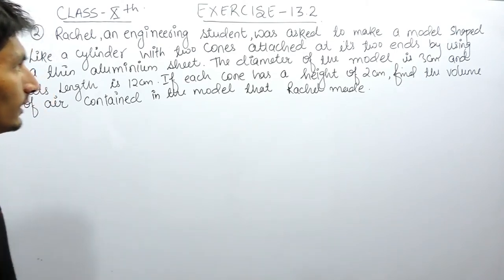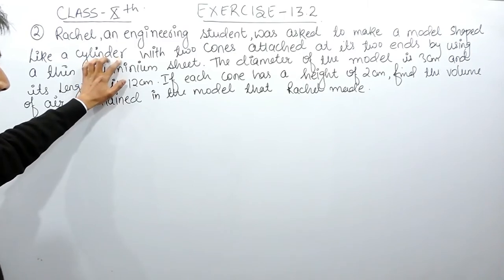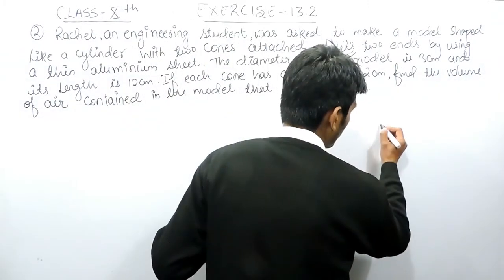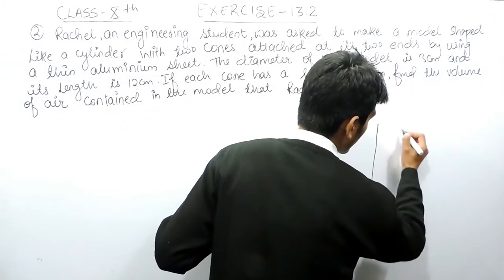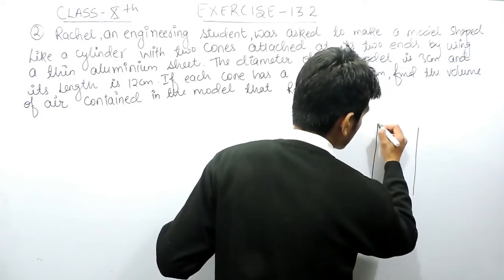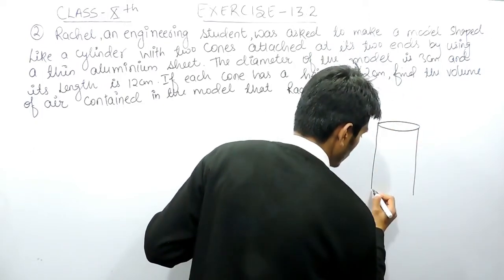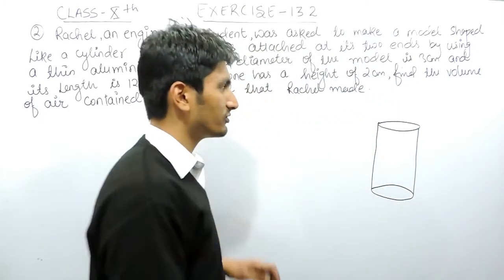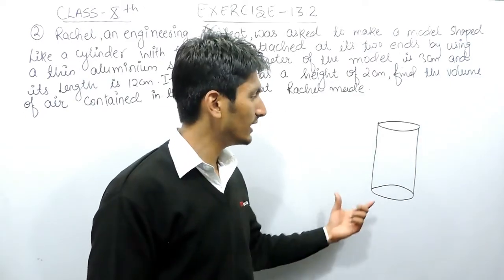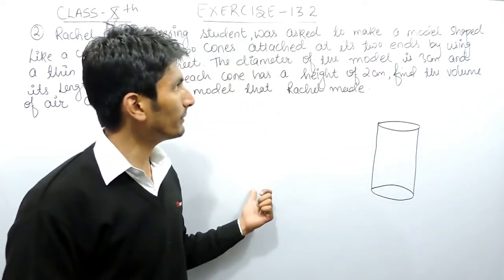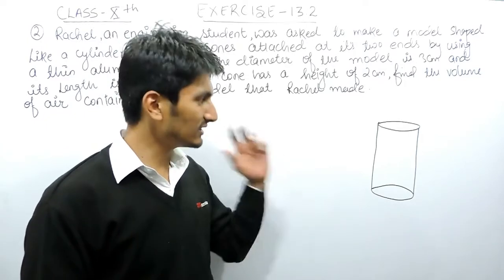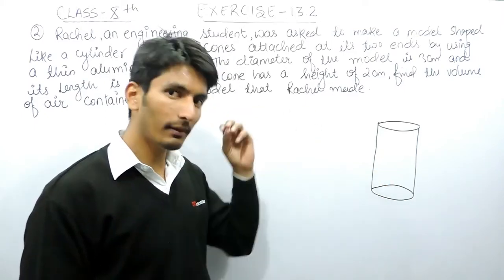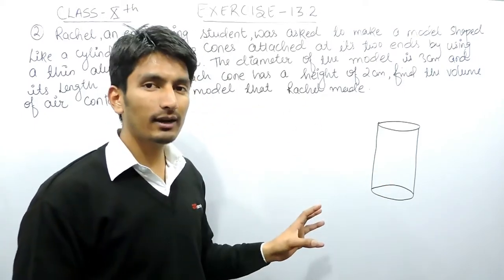So here a model is made when a cylinder is attached with two cones. If I make a diagram of this it will look like this. One important thing which I have already discussed in previous videos is that if you want to solve a question based on mensuration, first of all you need to imagine that figure. If you are able to imagine or make that 3D figure in your mind, the solution will become easy for you.